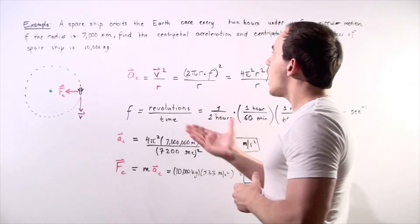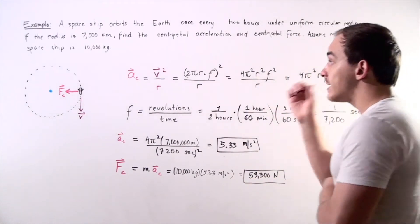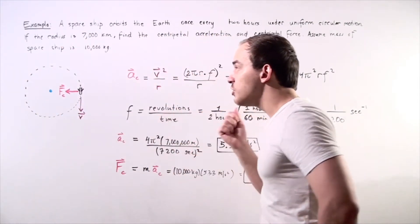What exactly are we given in our problem? We are told that it takes our space shuttle two hours to orbit, to make one orbit. So that means we know the frequency of our object.